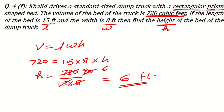I hope you have understood this question. Volume of a rectangular prism is very easy — just one formula: volume equals length multiplied by width multiplied by height. Just be careful with the values given and don't forget to write the unit. If such videos help you increase your knowledge, please like and subscribe to my channel and share with your friends. Thank you.